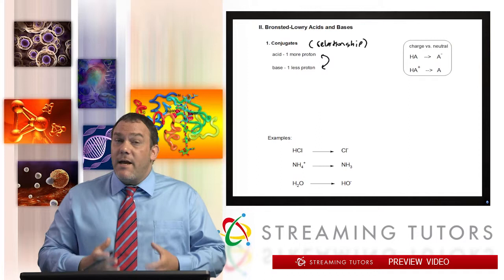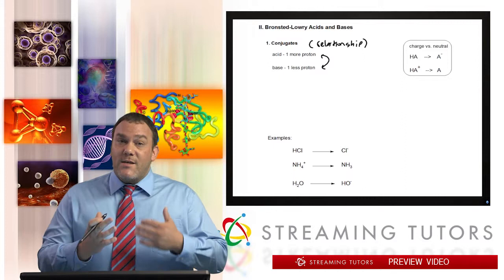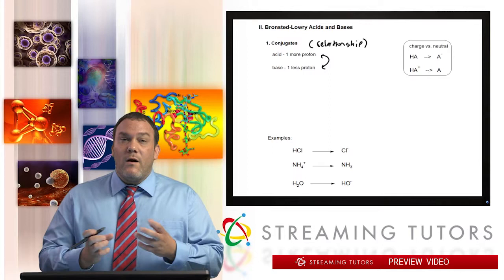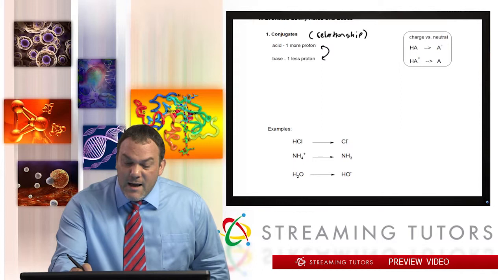If it has an extra proton, an extra hydrogen, then it's considered to be the acid form. Whereas if it has one less hydrogen, and that's the only difference, then it's considered to be its conjugate base form. But again, this is a relationship term between a pair of molecules.